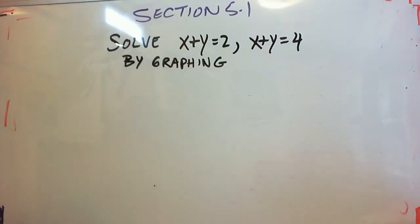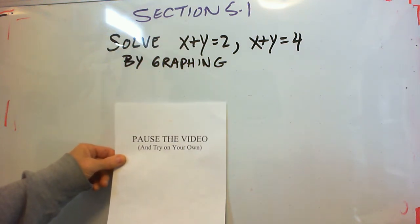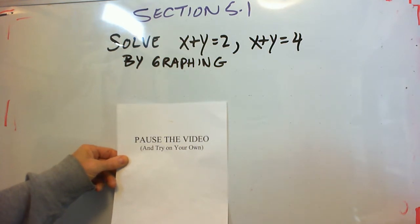The next problem. Solve the system x plus y equals 2, x plus y equals 4 by graphing. Just like the previous problem. Graph both lines and see where they intersect. So why don't you graph these two lines and see if you can find the point of intersection. Pause the video and do that.